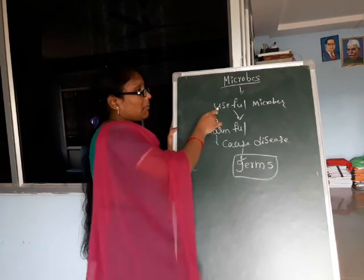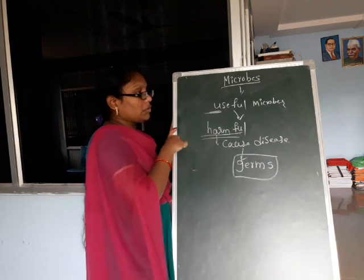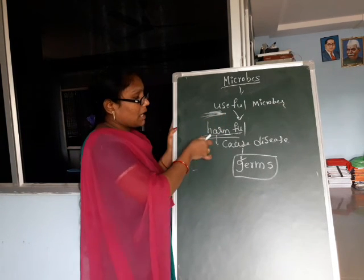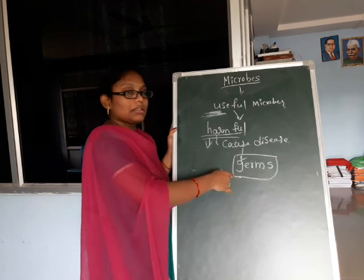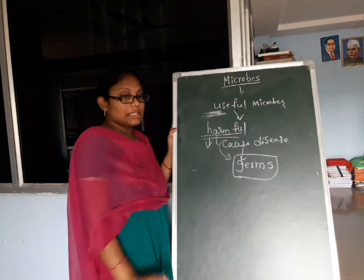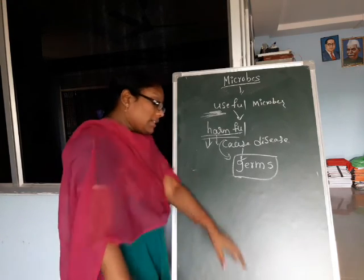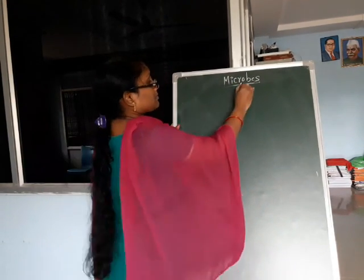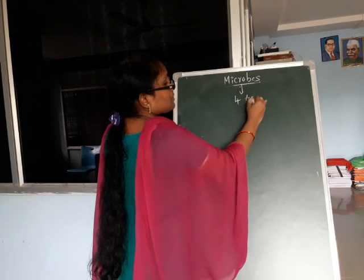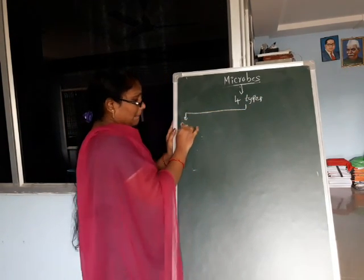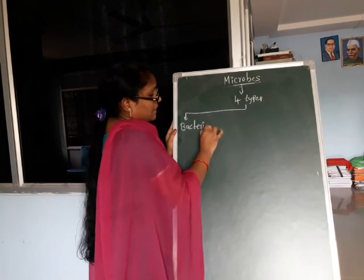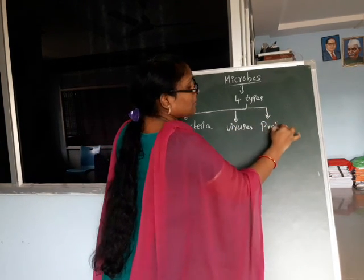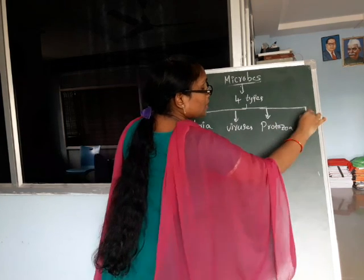Microbes are of two types: some are useful microbes and some are harmful microbes. These microbes are of four types: the first one is bacteria, the second one is virus, the third one is protozoa, and the fourth one is fungi.